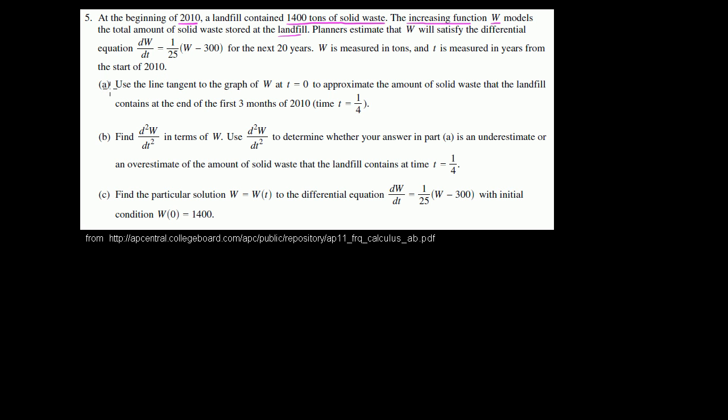Alright, let's get into this. So part A: use the tangent line to the graph of w at t equals 0 to approximate the amount of solid waste that the landfill contains at the end of the first three months of 2010. So since time is in years, three months would be 1 fourth of a year, so t equals 1 fourth.